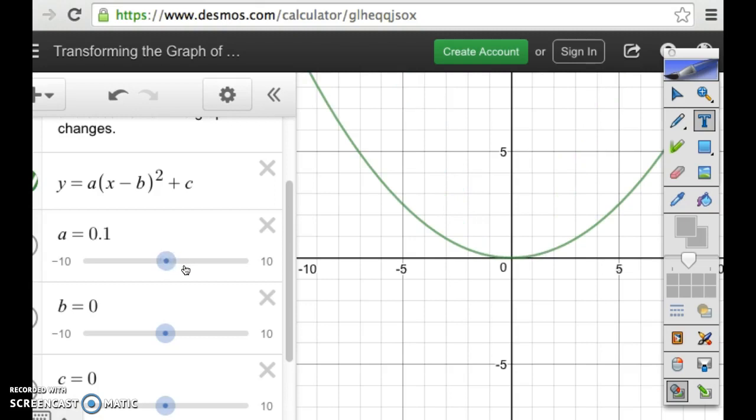Could it be a fraction? It's a proper fraction, right? This is like 1 tenth, 2 tenths, 3 tenths, 4 tenths. All of these are proper fractions where the numerator is smaller than the denominator.